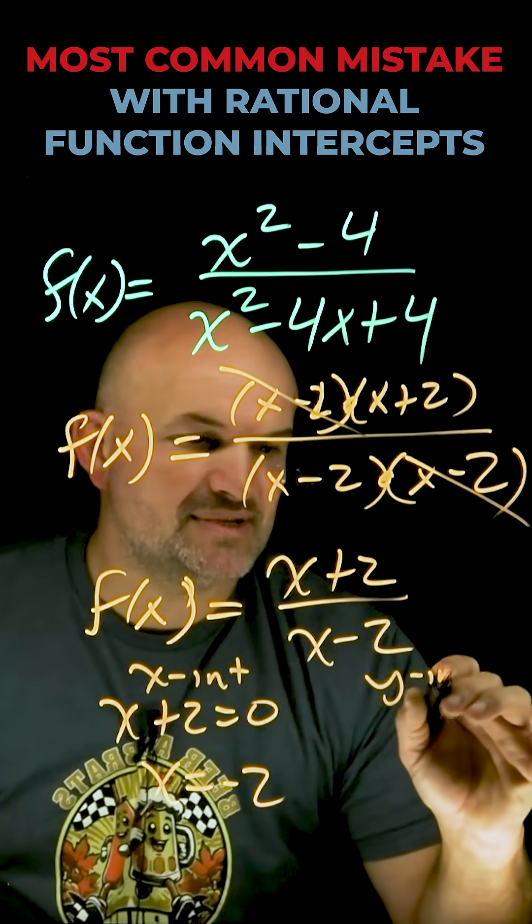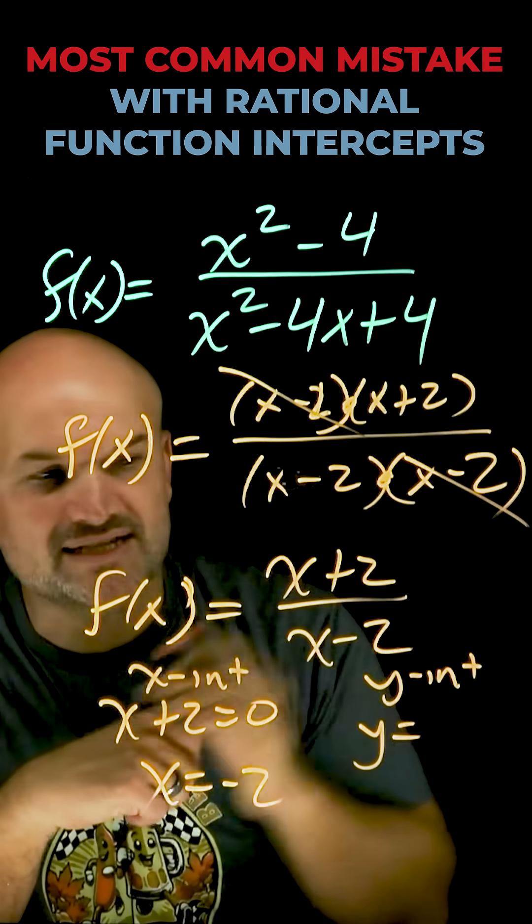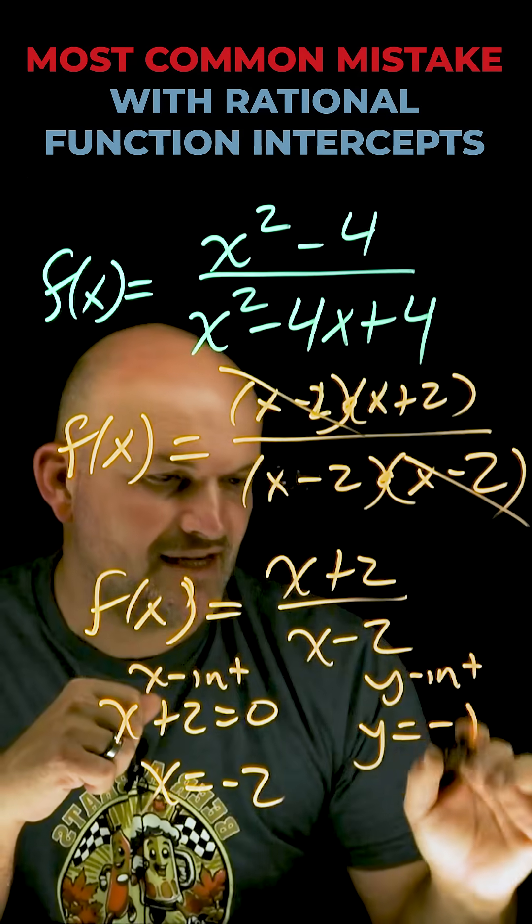And my y-intercept is simply going to be when I take my constant over my constant. In this case, that's going to be positive 2 over negative 2, which is negative 1.